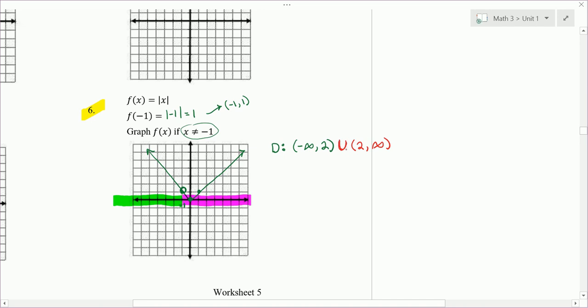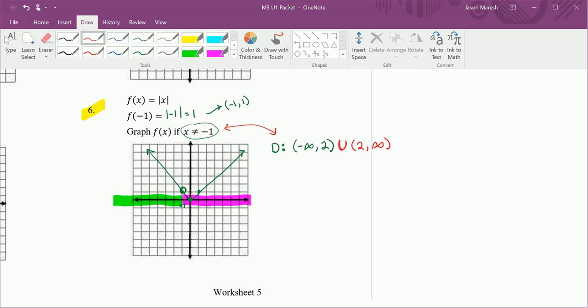And when you have two intervals and we want to include both of them, we put a union sign between them. So that's the fancy notation. These two things mean the same thing. The x not equal to negative 1 would be our inequality notation, whereas the thing we just wrote would be our interval notation.